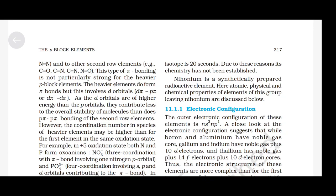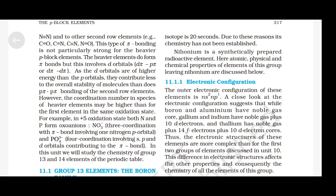This type of pi bonding is not particularly strong for the heavier P-Block elements. The heavier elements do form pi bonds but these involve d orbitals — d-pi p-pi or d-pi d-pi. As the d orbitals are of higher energy than the p orbitals, they contribute less to the overall stability of molecules than does p-pi p-pi bonding of the second row elements. The coordination number in species of heavier elements may be higher — for example, in the +5 oxidation state, nitrogen forms NO₃⁻ with 3-coordination, while phosphorus forms PO₄³⁻ with 4-coordination involving s, p, and d orbitals. In this unit, we will study the chemistry of group 13 and group 14 elements.